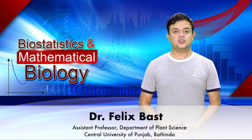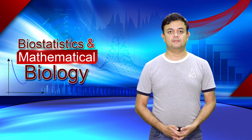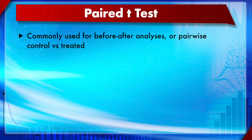Module 16: t-distribution and tests of significance based on t-distribution, Section 3: Paired t-tests. The paired t-test is used commonly for before-and-after analysis or pairwise control versus treated comparisons, where everything has a pair. It is also used for matched groups where each element of the groups has certain matching characteristics.